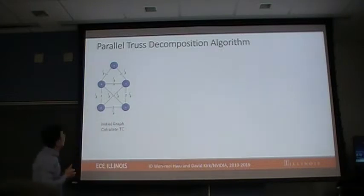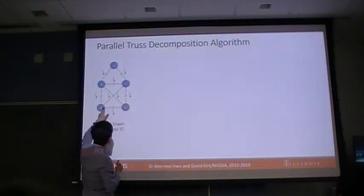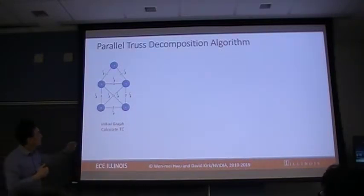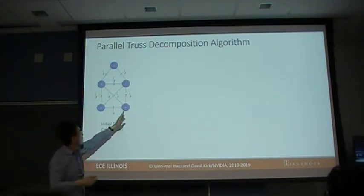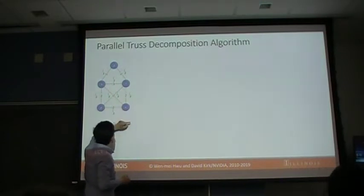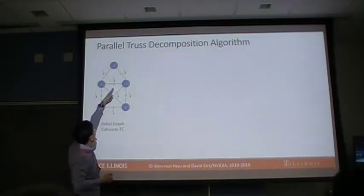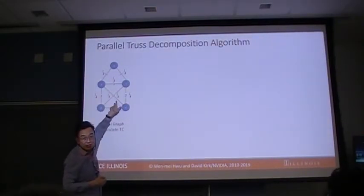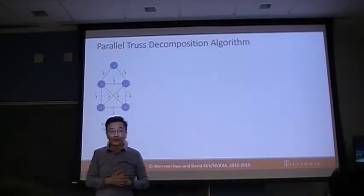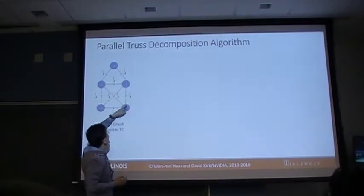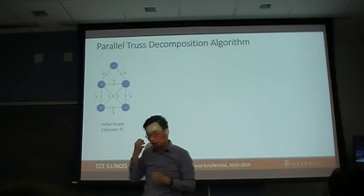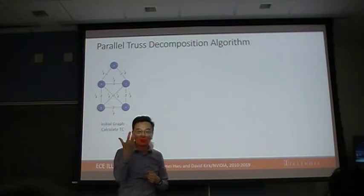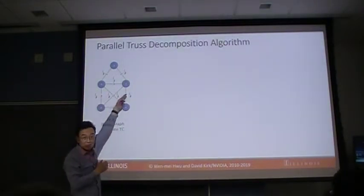Looking at this graph intuitively, I look at each of these edges and ask how many triangles each edge is involved in. This edge has one triangle, this edge has two triangles. This edge involves this triangle and this triangle, and here this triangle and this triangle. So this is a very tightly connected subgraph. Some edges may be involving more than two — this one involves two triangles inside the structure but also one triangle outside. That's why it's 'at least' k minus 2 triangles.